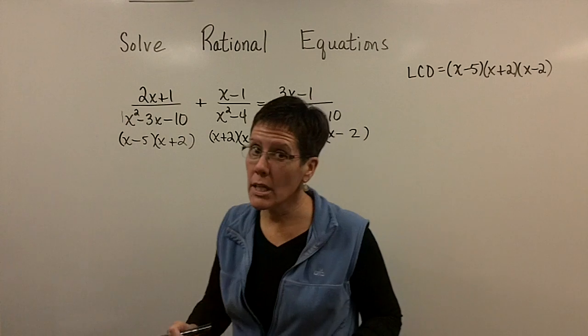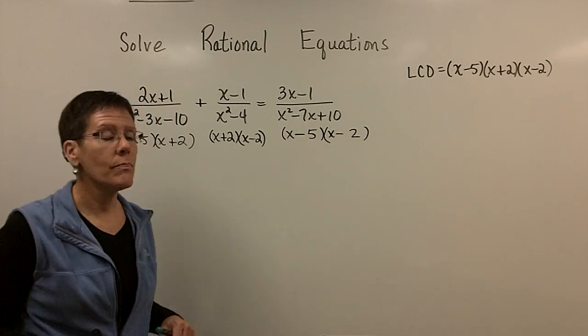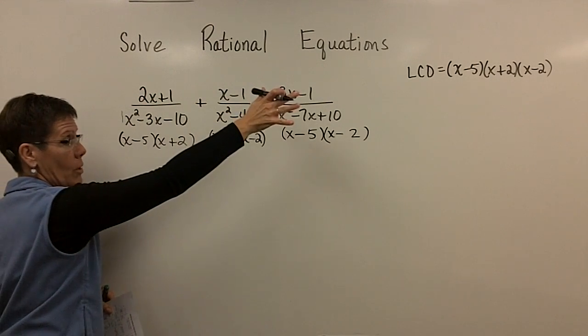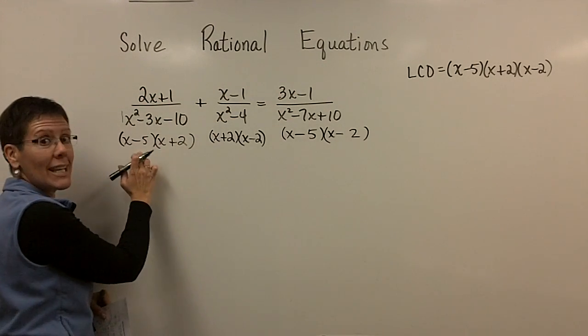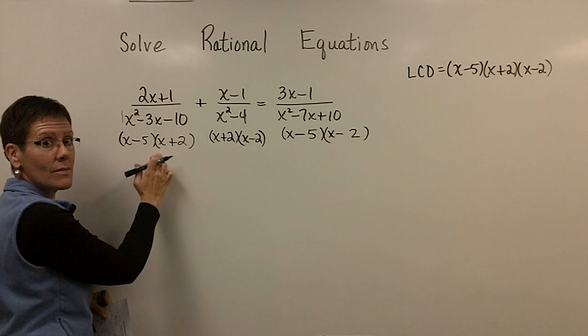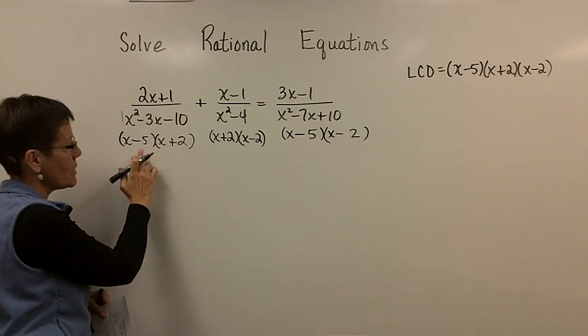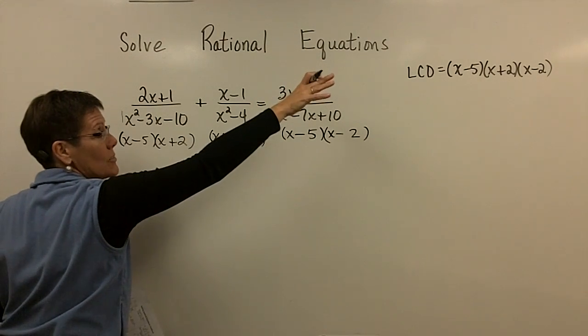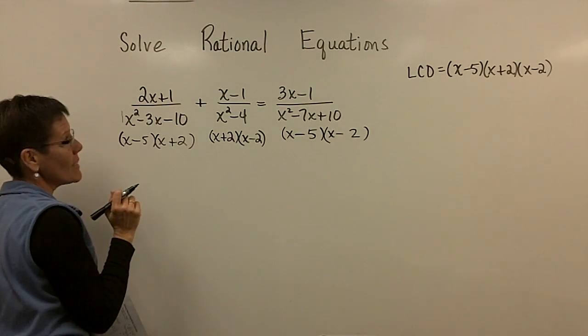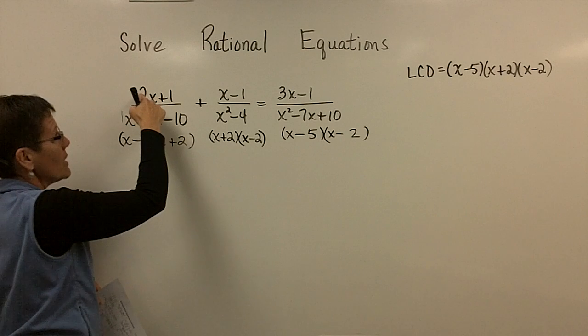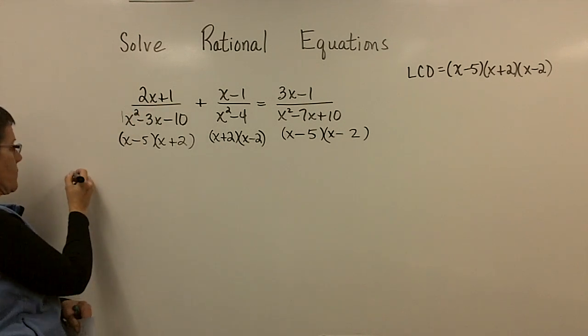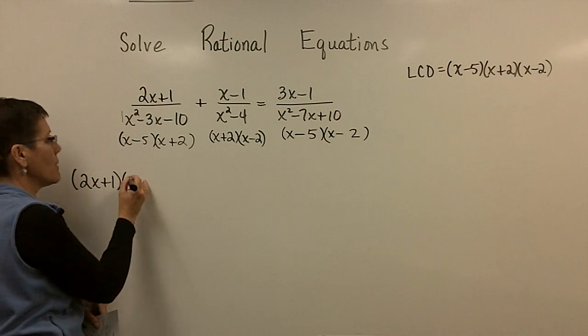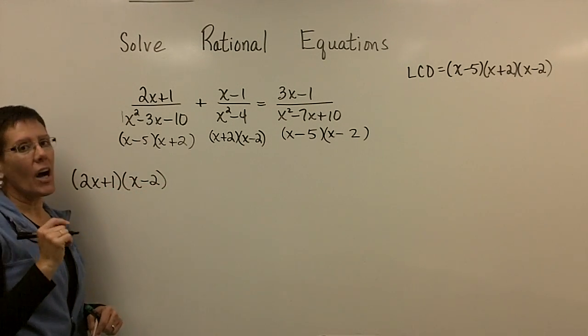Now, if I could try a shortcut on you right now, I would love to do that. Picture multiplying this fraction by all three of those and picture what's going to cancel out with this denominator. So the x minus 5 and the x plus 2 are going to cancel out. So what's left?